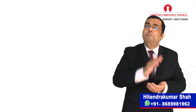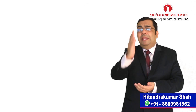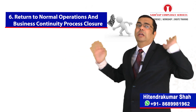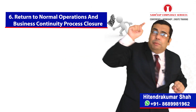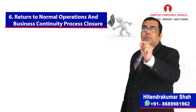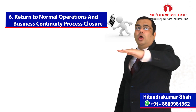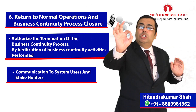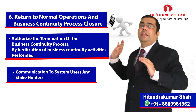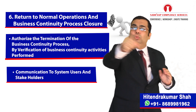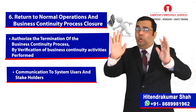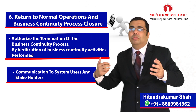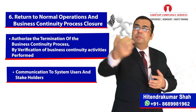The last and very important element is return to normal operations and business continuity process closure. As per this element, we have to authorize the termination or closure of the business continuity process by verification of business continuity activities performed, and communicate to all system users and stakeholders that the system has now returned to normal and can be used in the normal way.